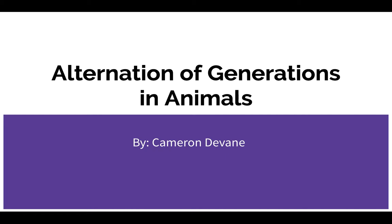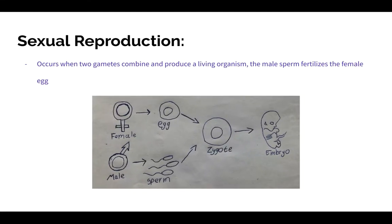To understand alternation of generations, one must first understand the difference between sexual and asexual reproduction. Sexual reproduction occurs when two gametes combine and produce a living organism. The male sperm fertilizes the female egg, and thus life begins to form. In this drawing, one can see that the male gamete, or the sperm, fertilizes the female's gamete, better known as the egg, in order to produce a zygote.